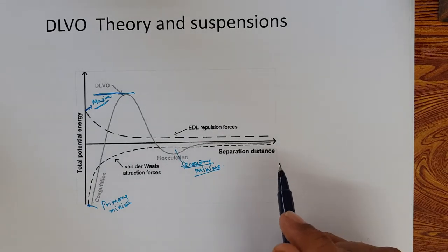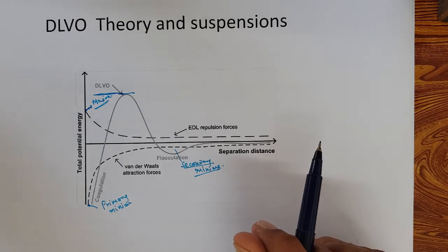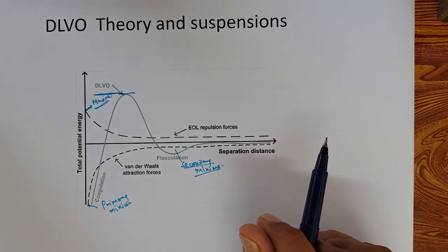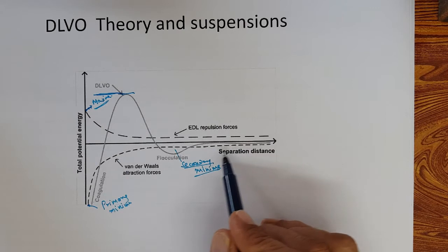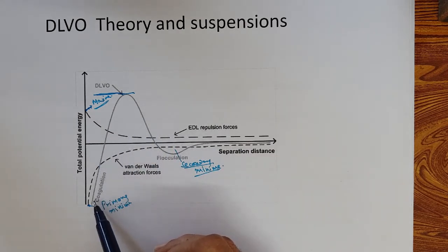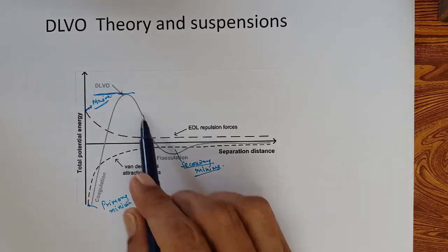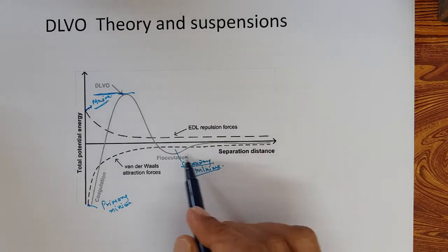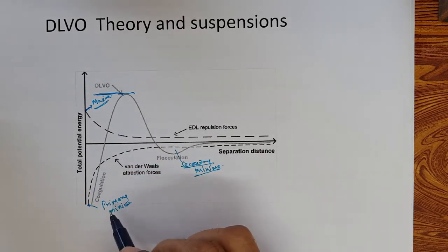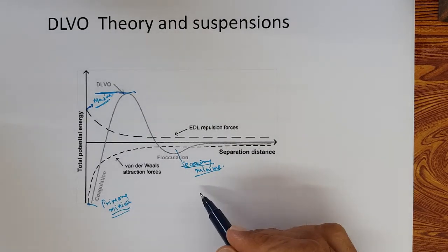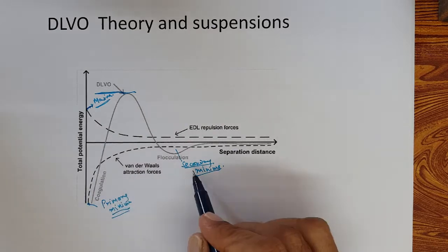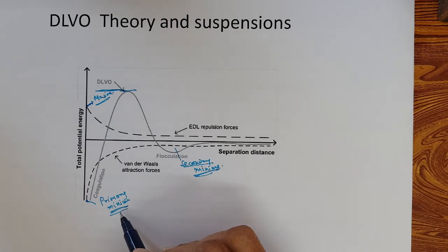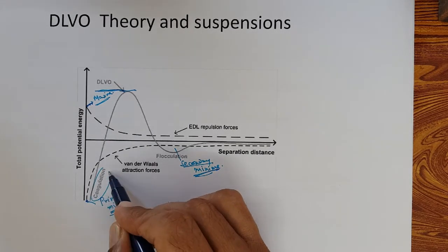When you add an electrolyte of opposite charge to the particle, the particles try to flocculate and then coagulate. In this process, there are two things: there is a primary minimum and a secondary minimum. In the primary minimum, complete coagulation takes place.